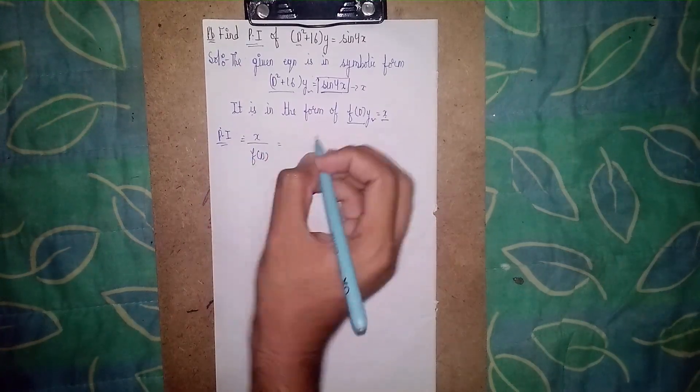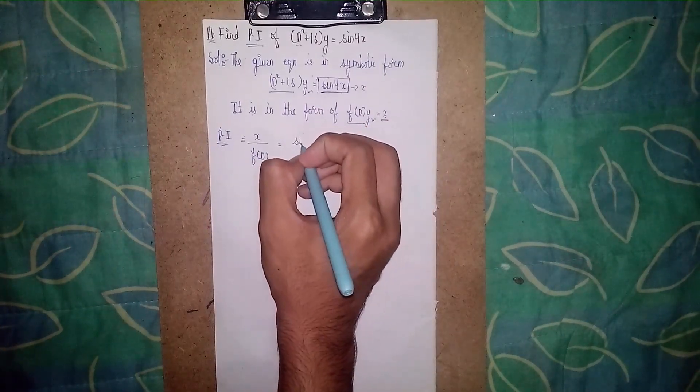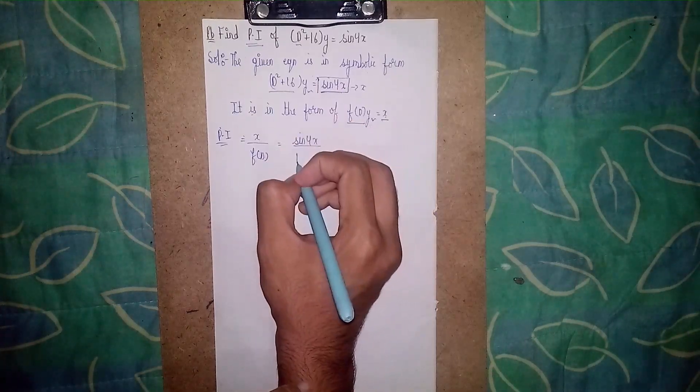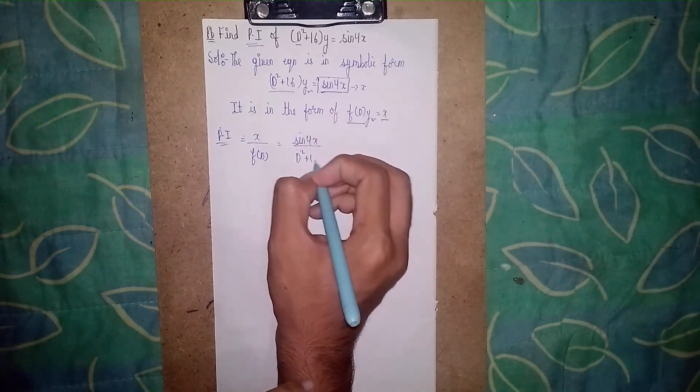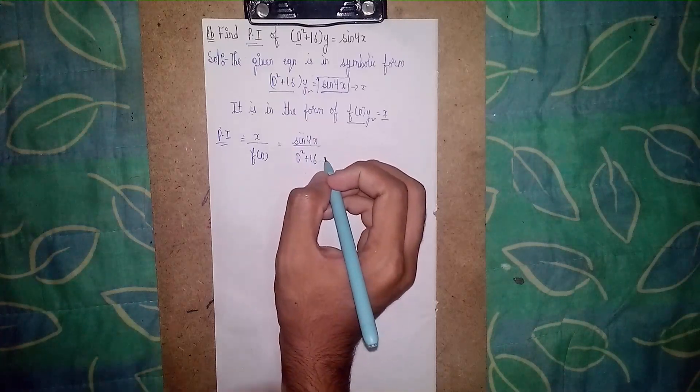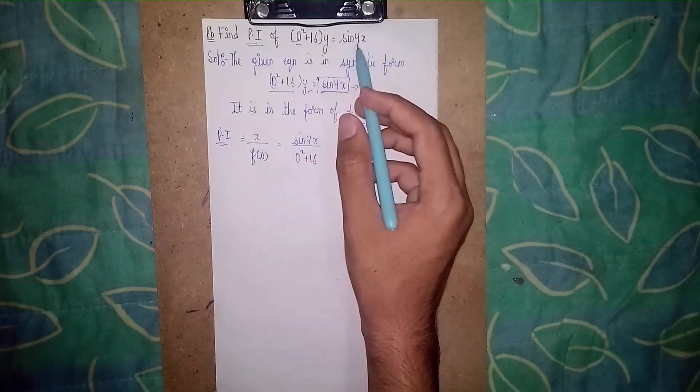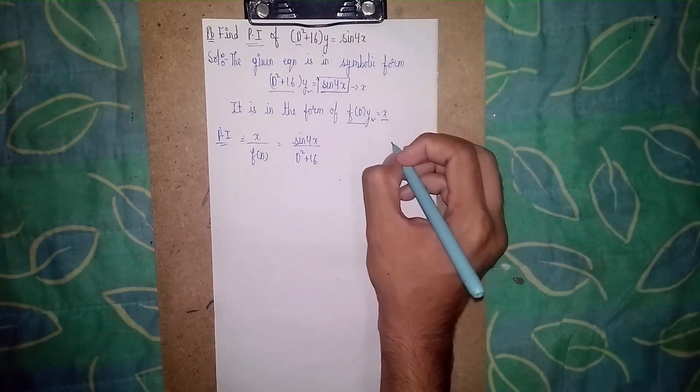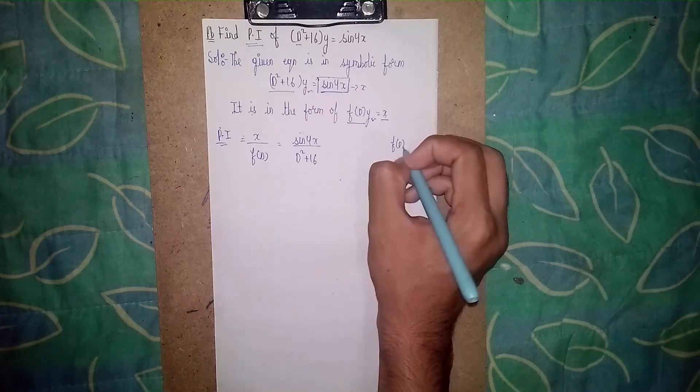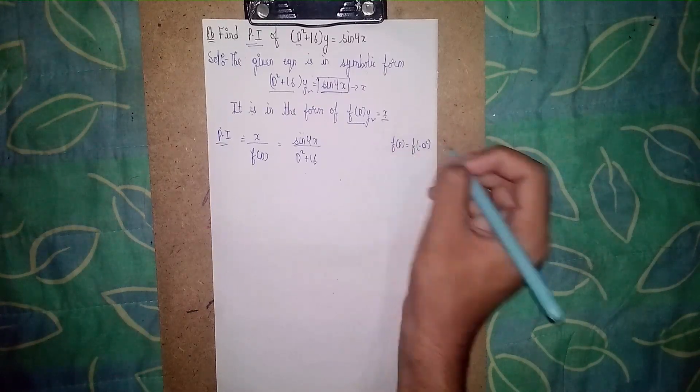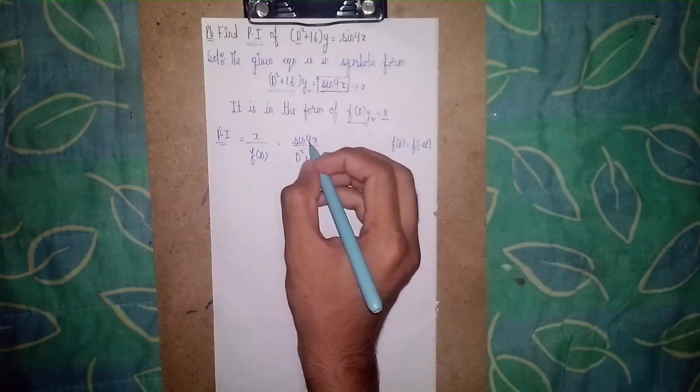Now write PI: PI = X/f(D). So X is sin 4x, therefore PI = sin 4x / (D² + 16). In the working rule of this non-homogeneous differential equation, when the trigonometric function is given, you have to substitute f(D) = f(-a²).